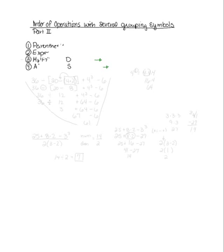There's a part two to the order of operations, and that's when there's more than one grouping symbol. As a reminder, the rules are: parentheses, exponents, multiplication and division from left to right, and addition and subtraction whichever you see from left to right. So there really are only four steps, and multiplication and division are on the same playing field.